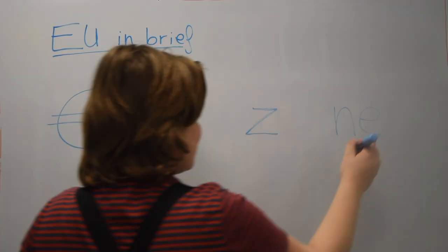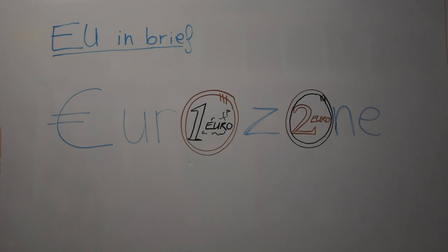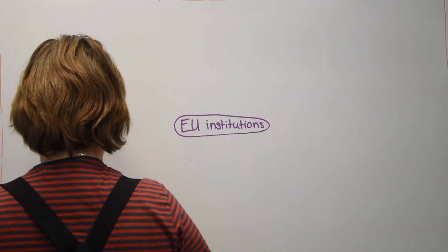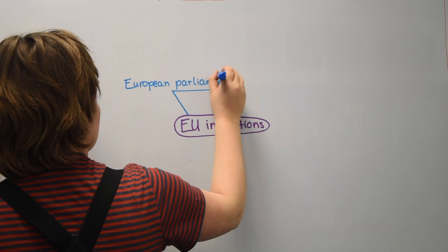Nineteen countries are using the euro, which creates the eurozone, but for example Sweden decided to keep its own money, the Swedish Krona. The European Union is composed of at least 14 institutions, but let me explain the role of the five main ones.